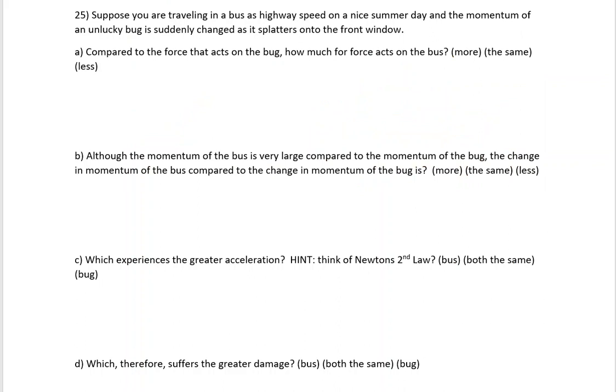Suppose you're traveling in a bus at highway speed on a nice summer day, and the momentum of the unlucky bug is suddenly changed as it splatters on the front window. Compared to the force that acts on the bug, how much force acts on the bus? They're wanting you to just think about what's happening here. There was a force that acted on the bug and a force that acted on the bus. How are those forces compared to each other? If you think back to Newton's third law, it says for every action there's an equal and opposite reaction. They're the same because of Newton's third law.